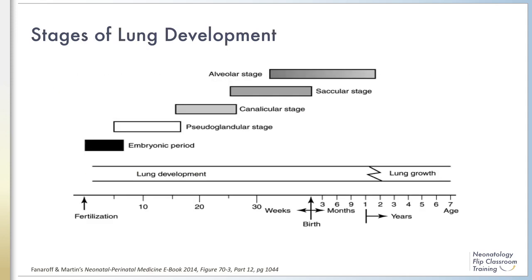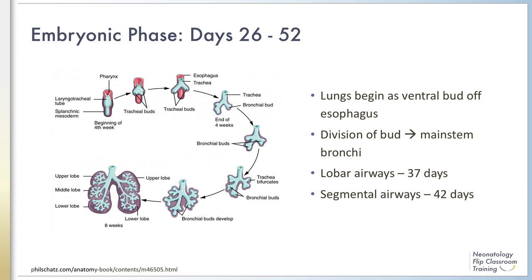Lung development plays a significant role in the pathophysiology of lung disease in the preterm infant. The embryonic period occurs first and involves the lung buds developing from the foregut. Next is the pseudoglandular phase when the conducting airways are formed. The canalicular phase involves differentiation of pulmonary epithelium into type 1 and type 2 pneumocytes, and surfactant production begins during this phase. During the saccular phase the alveolar ducts and air sacs form, and during late fetal life continuing through childhood, the alveolar phase involves secondary septation with a dramatic increase in the number of alveoli present.